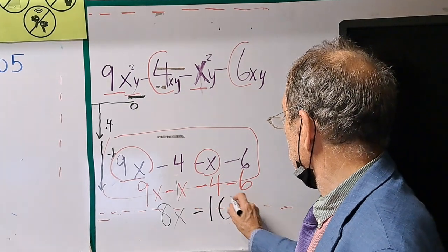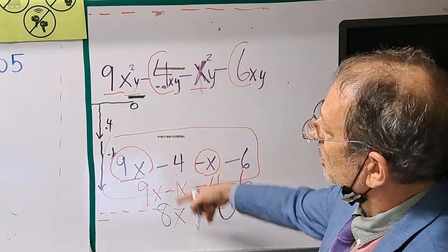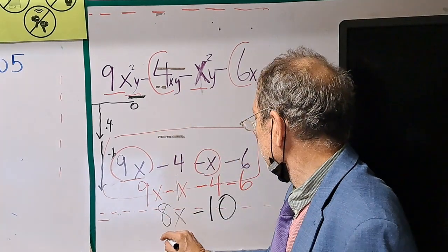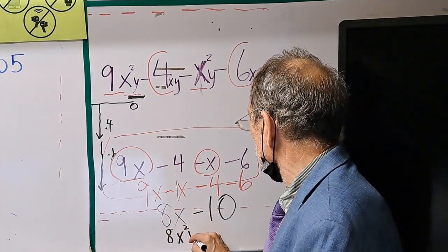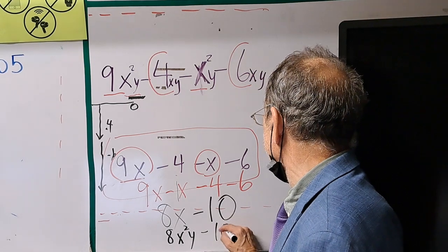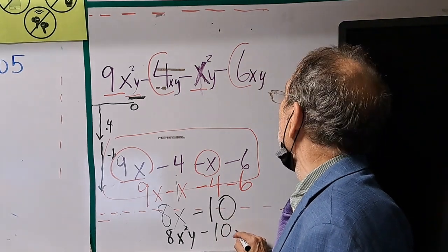Yeah, exactly. Negative 10. So if you were doing this the way they want it, it's like 8x squared y minus 10xy.